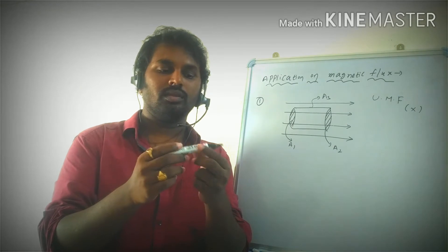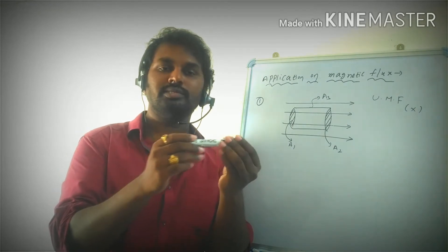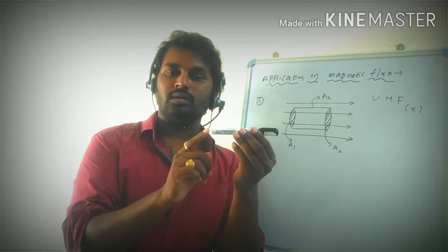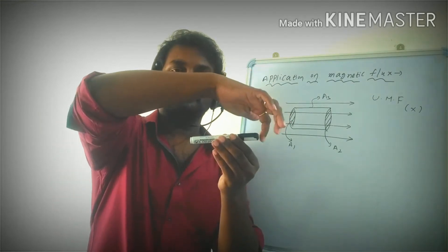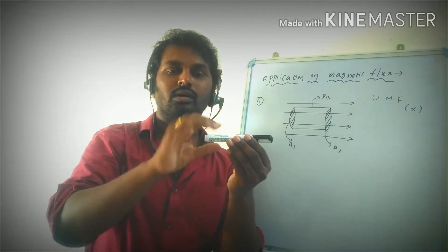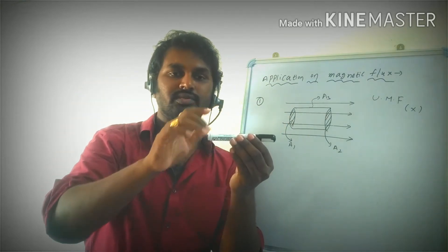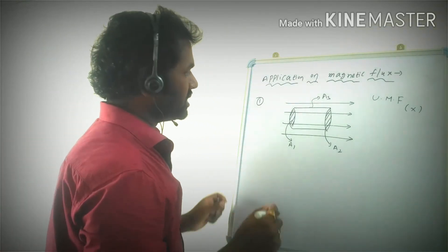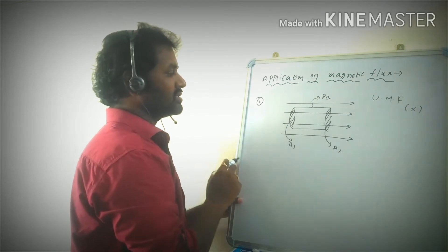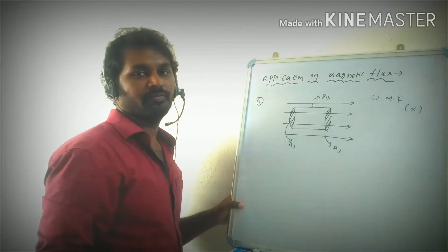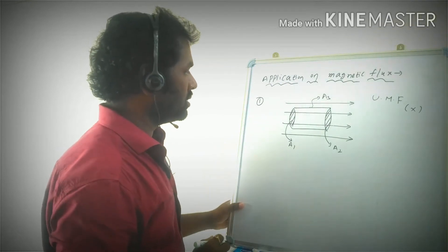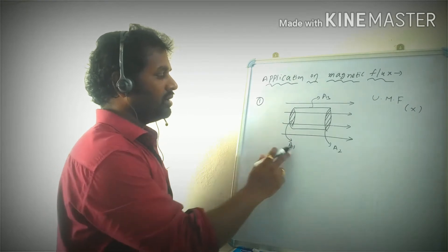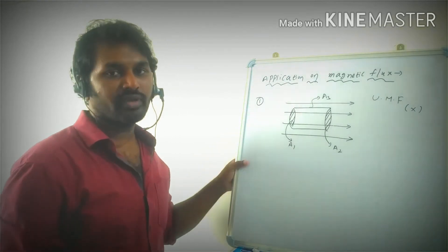If you look at this, the cylinder has three surfaces: flat surface A1, flat surface A2, and the curved surface A3. Magnetic field lines are passing through this cylinder. Now let us try to find how much flux is linked with the surface A1.